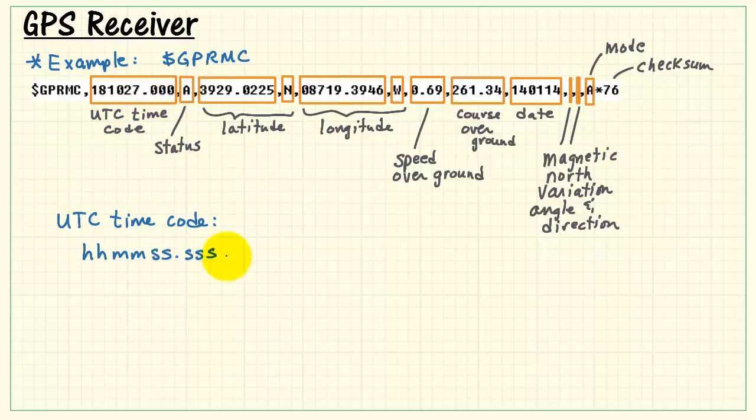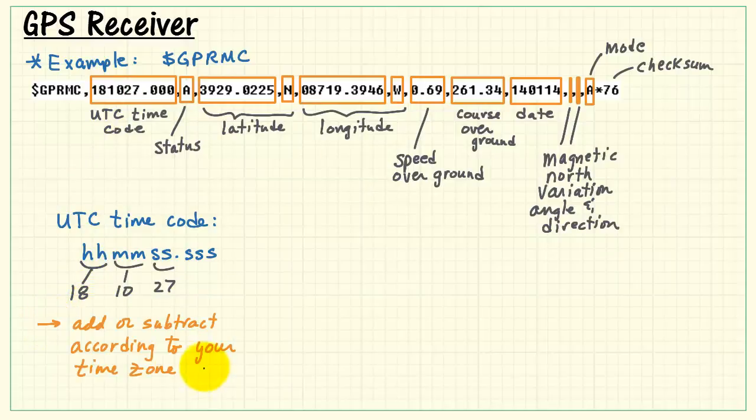Let's look at the time code first. UTC stands for Coordinated Universal Time. The format is hours, minutes, and seconds, with fractional seconds as well. You'll want to add or subtract some number of hours from this value according to your time zone. The status is either an A or a V character. A indicates valid data, and V indicates invalid data.